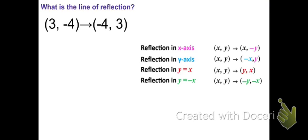When given an initial point and the reflected point, you can identify how they changed and therefore how it was reflected — whether it was reflected over the x-axis, y-axis, y equals x, or y equals negative x.